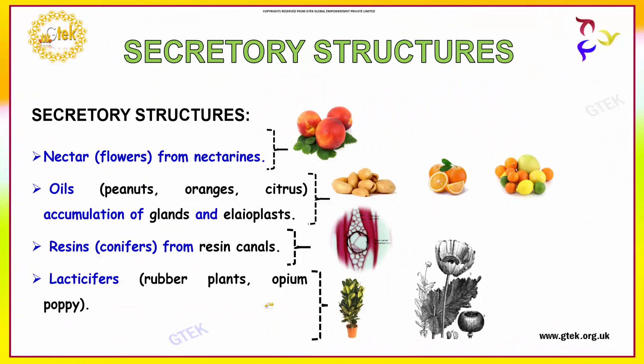Let us talk about secretory structures. Secretory structures include nectaries from nectarines, and oils from peanuts, orange, and citrus, which involve accumulation of glands and oleoplasts. The resins come from resin canals, which you can see here. Laticifers come from rubber plants and opium poppy. These are all types of secretory structures.